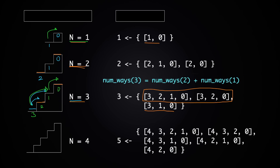Based on that, we can write: num_ways(3) = num_ways(2) + num_ways(1). And in general, num_ways(n) = num_ways(n-1) + num_ways(n-2). You can verify this: num_ways(4) = 5, which equals num_ways(3) = 3 plus num_ways(2) = 2, giving 3+2=5. This is exactly a Fibonacci-like relationship.